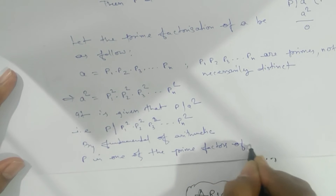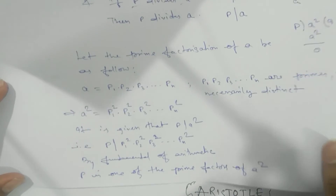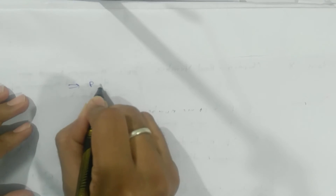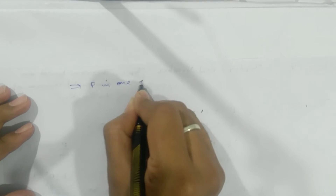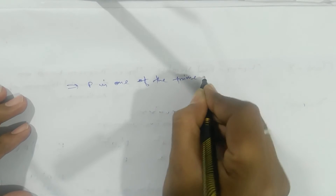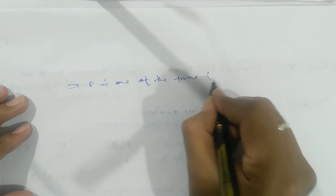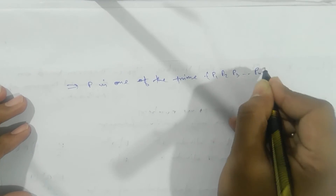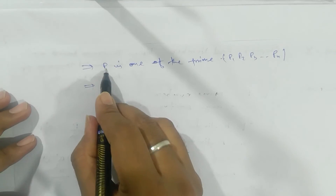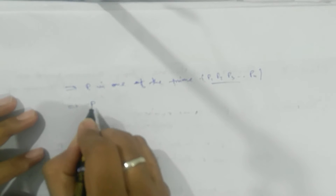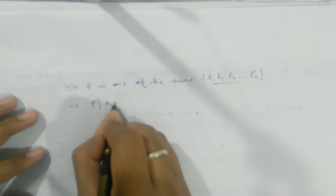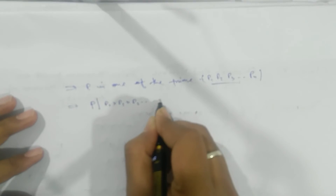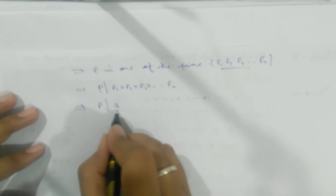By the Fundamental Theorem of Arithmetic, the prime factors of a² are exactly p1, p2, p3, ..., pn. So P must be one of these primes. This means P divides the product p1 × p2 × p3 × ... × pn, which means P divides a.